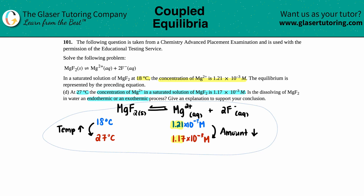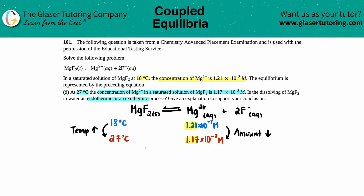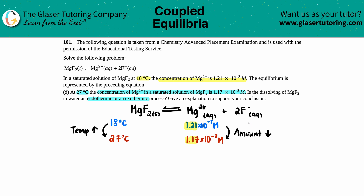So if we're decreasing the Mg²⁺ concentration as temperature increases, which reaction direction are we favoring? Are we favoring going left to right as temperature increases, or going right to left? Keep in mind the amount dropped — if you're losing, you have to favor the other direction. So as temperature increases, going in the reverse direction is favored.